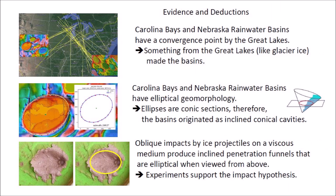In science, we make some observations and propose a hypothesis that fits all the facts by a process of logical deduction. We know that the Carolina Bays and Nebraska Rainwater Basins have a convergence point by the Great Lakes. Previous studies have shown that the bays don't have extraterrestrial or extraneous mineral material, so we can deduce that something from the Great Lakes, like glacier ice, made the basins. Another fact is that the Carolina Bays and Nebraska Rainwater Basins have elliptical geomorphology, as we have shown by fitting them with ellipses. Ellipses are conic sections, therefore it is logical to propose that the basins originated as inclined conical cavities. We can demonstrate experimentally that oblique impacts by ice projectiles on a viscous medium produce inclined penetration funnels that are elliptical when viewed from above, so the experiments support the impact hypothesis.